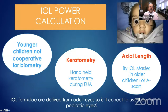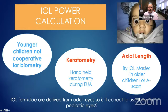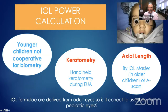IOL power calculation is extremely important. Younger children may not cooperate for biometry. For very small children and infants in the first two years of life, we use a handheld keratometer, many times in the operation theater, and we also take their axial length. For cooperative children, we use the IOL Master, particularly for older children.